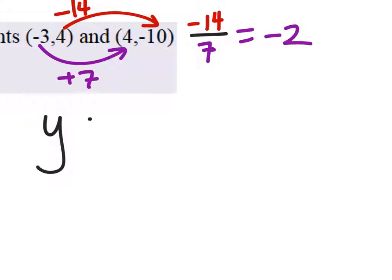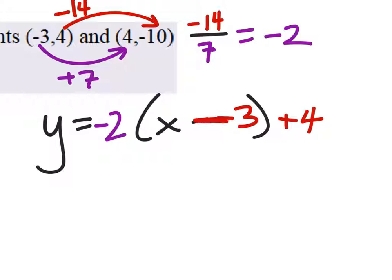In point-slope form, we replace our slope with -2. We can use either point - I'll use (-3, 4), so we have y = -2(x + 3) + 4.